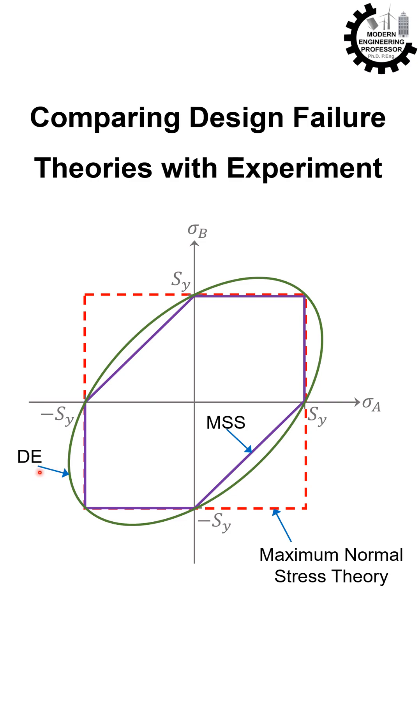This graph also shows the results of experimental tests for various ductile materials at failure. The first observation we can make is the maximum normal stress theory is not a safe theory, especially in the fourth quadrant, as it predicts safety while experimental data show failure. This was also mentioned before, and we only discussed this theory due to its historical significance and simplicity.